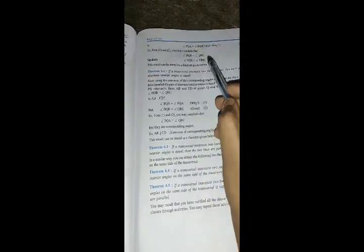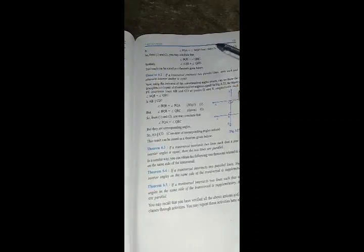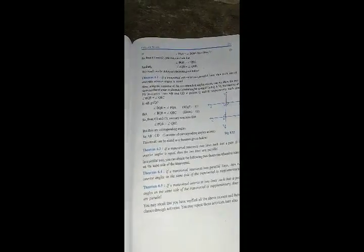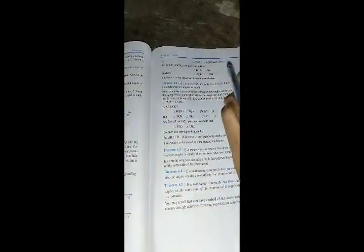BQR equals QRC, and since alternate angles are equal, this means the lines are parallel. We can write a solution following this approach for the question.